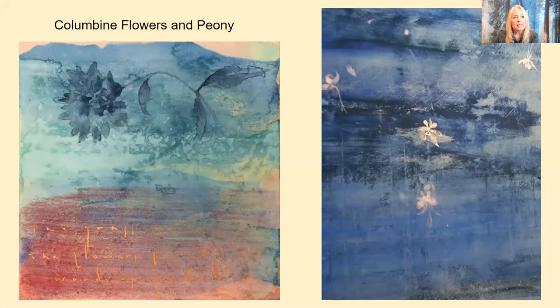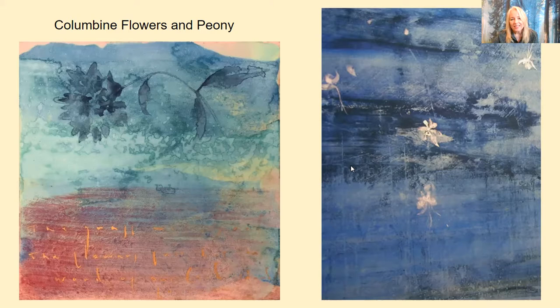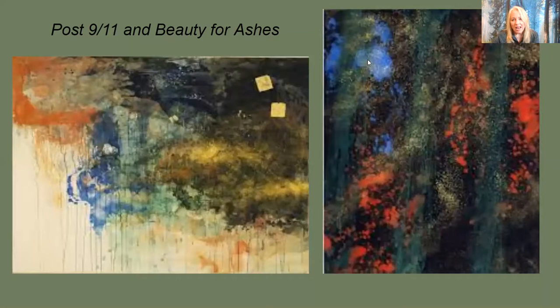He took to painting in response to difficult things. There were some deaths that shocked our country at a school called Columbine, and this is a painting he did for those lives lost at Columbine. He also did paintings post 9/11, when a very important building in New York was destroyed — this is called 'Beauty for Ashes.' He is a very thoughtful artist.